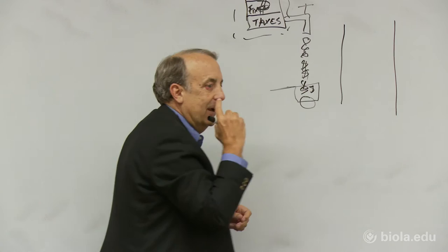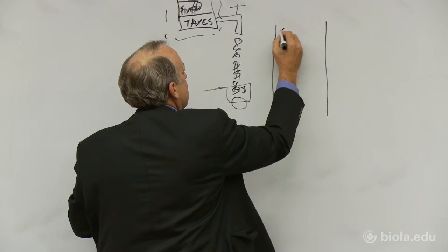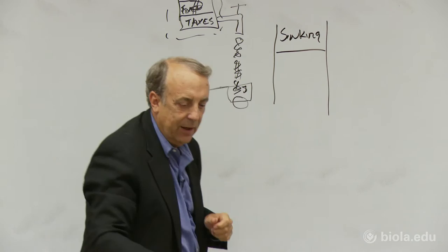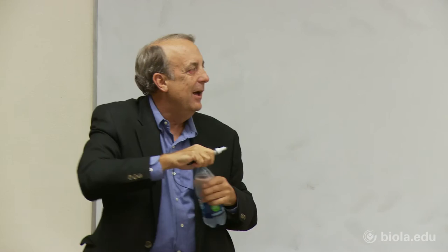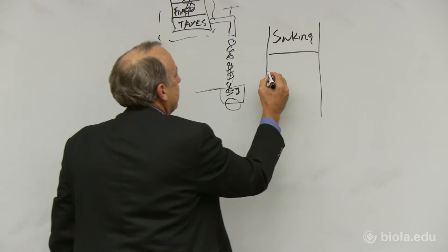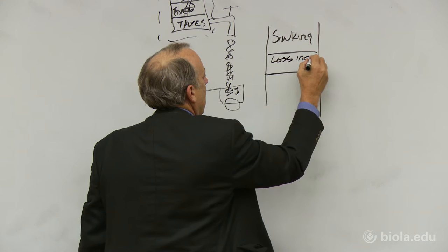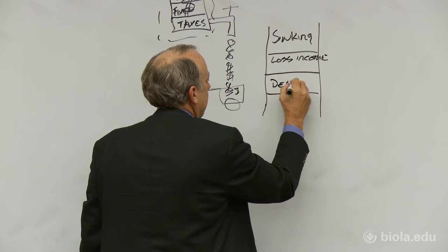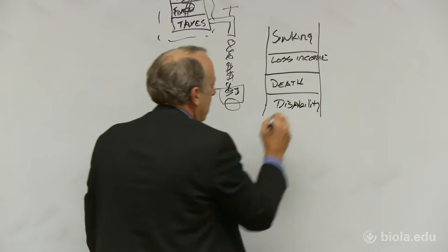There's four things that you've got to take care of probably before you can really start accumulating. One is a sinking fund for emergencies. Then you've got to be concerned about loss of income due to job loss or whatever. Then you've got death and disability.